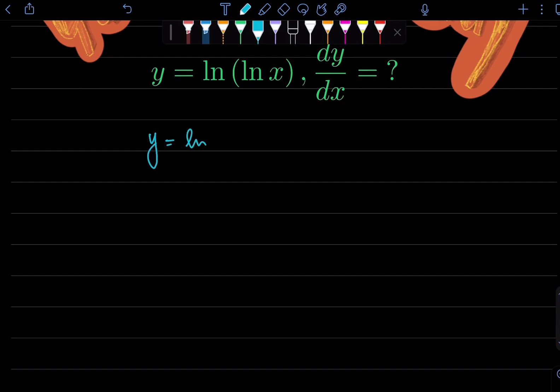We know that the base for this ln is e and that e can go this way and the left side will become an exponential. So e raised to power y will be equal to ln x is our equation.